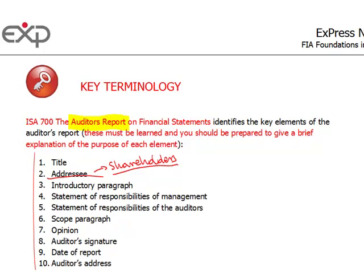Then there is an introductory paragraph which says we audited the financial statements. It identifies the financial statements, so basically for which year. Then the statement of responsibilities of the management — we remember from our previous videos that the managers are responsible for the preparation of financial statements in accordance with the relevant accounting framework. And then the statement of responsibilities of the auditors, who are responsible for issuing the opinion on those financial statements.